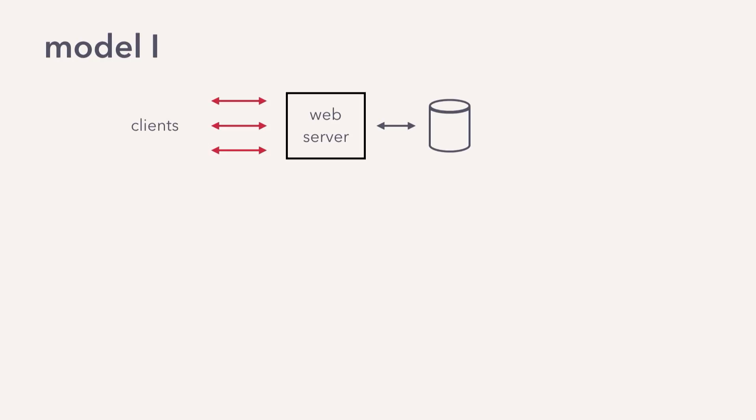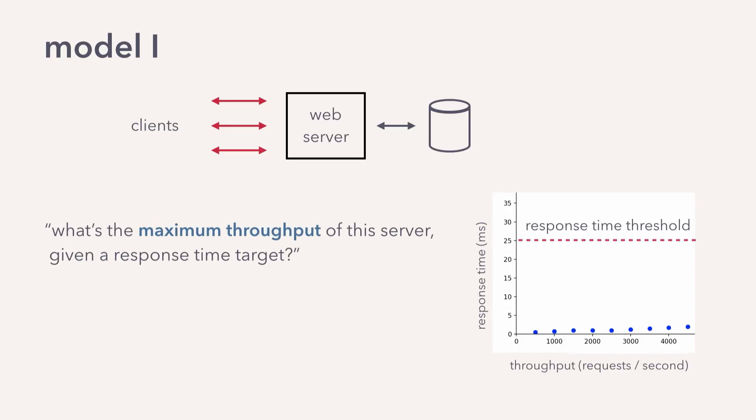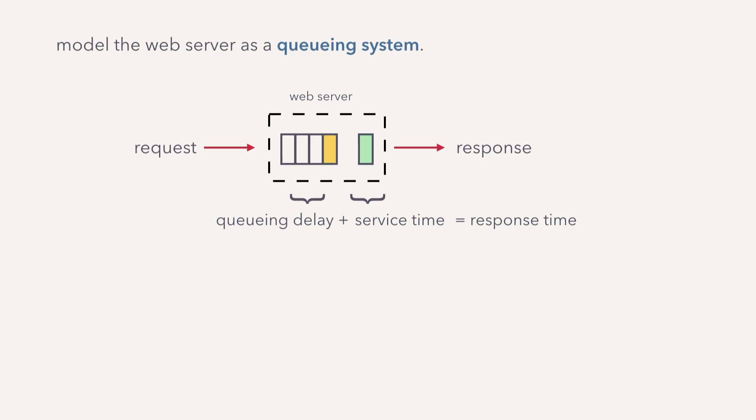Say our single server system is a very simple web server. Questions we typically have about such a system are: what's the maximum throughput it can sustain without exceeding that response time SLA that we have? And second, how can we improve the average response time to give our users a better experience?